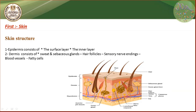We also have sensory nerve endings — the sensory nerve endings visible as the yellow spots in the diagram. And we have blood vessels — a group of blood vessels, as we can see.